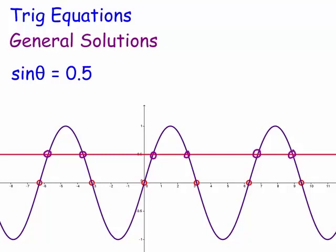Let's quickly do this one. If we put this into a calculator, inverse sine of a half gives about 30 degrees, so we get π/6. You can see here this one is π/6. The next one is symmetrical — it's 5π/6. Then going across to 2π and forward by π/6, that's 13π/6.